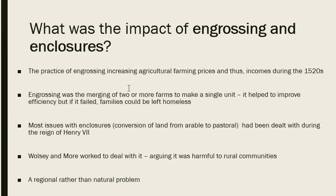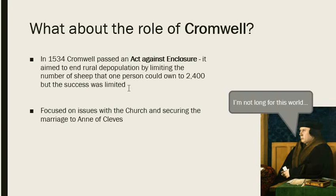Cromwell has a small role in the economy regarding enclosures. He brought in an act against enclosure which aimed to limit enclosures and the number of sheep people could have to 2,400 — because enclosures involved converting arable farming into pastoral farming with sheep or cows. However, success was limited; Cromwell was preoccupied with church issues, the dissolution of the monasteries, and the marriage to Anne of Cleves, and he was dead by 1540, so he was not a central part of the economy.